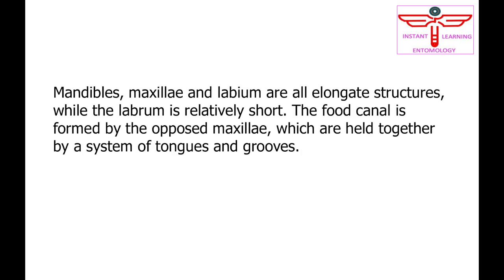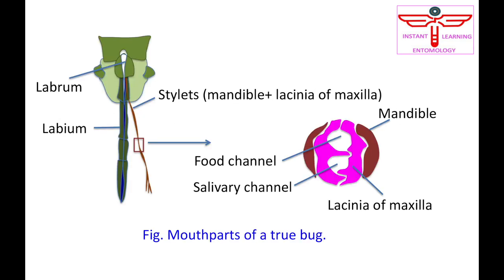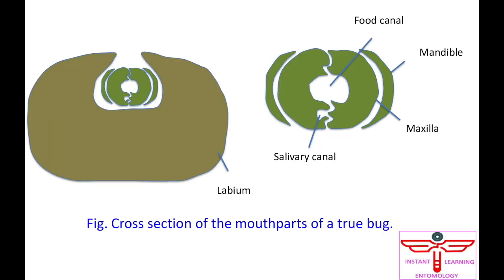Mandibles, maxillae, and labium are all elongate structures, while the labrum is relatively short. The food canal is formed by the opposed maxillae, which are held together by a system of tongues and grooves.